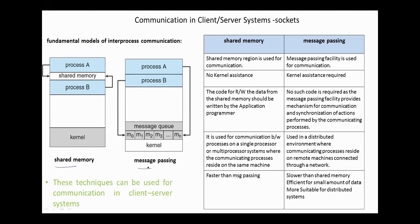In the shared memory model, a shared memory region or area is used for communication, while in message passing, a message passing facility is used for communication. In shared memory, no kernel assistance is needed, while in message passing, kernel assistance is required. In shared memory, the code to redirect data from the shared memory must be written by the application program, while in message passing, no such code is required, as the message passing facility provides a mechanism for communication and synchronization of actions performed by the communicating processes.